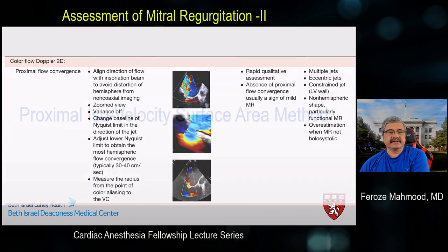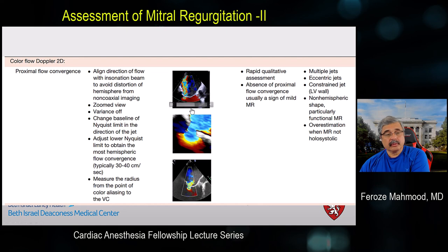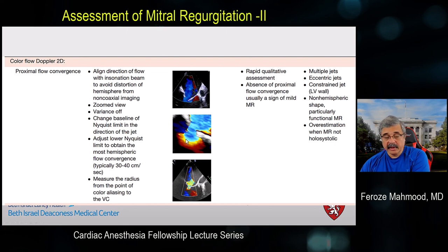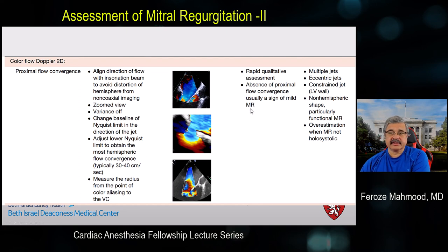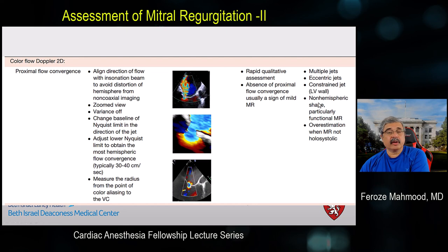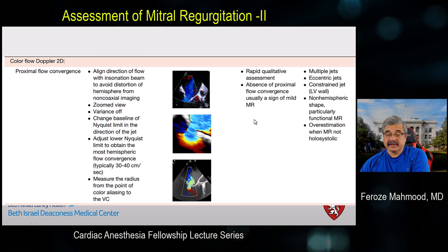For the PISA method: align the insonation beam with the direction of flow, use a zoom view, turn off variance mode, adjust the baseline and Nyquist limit in the direction of the jet, shift the lower Nyquist limit to obtain the most hemispheric flow convergence, and measure the radius from the point of aliasing to the vena contracta. Absence of flow convergence despite taking all these measures implies MR is quite mild. Problems include non-hemispheric shape of the PISA with wall-impinging jets and potential overestimation by extrapolating a single image over the entire systolic phase.